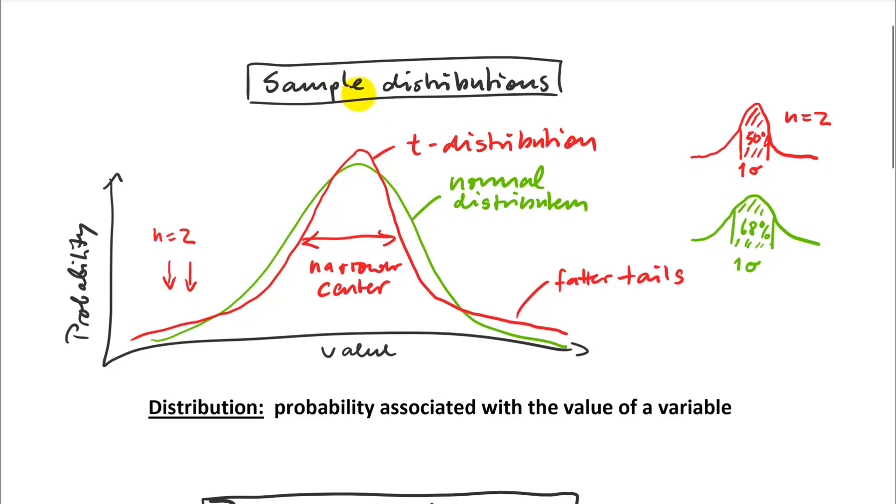So what happens is if you work with very small samples, your chances that you just by accident get two really small ones or two really large ones that give you a low mean or a high mean estimate, that probability increases if you have small sample sizes. So as your sample size increases, you approach a normal distribution. But for very small sample sizes, your distributions are actually what's called t distributed. So they have feather tails, they have a narrow middle. And what that means is that only 50% of my observations are within that interval of plus minus one standard deviations.